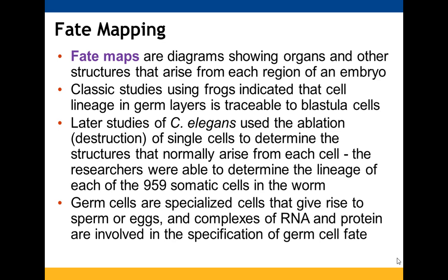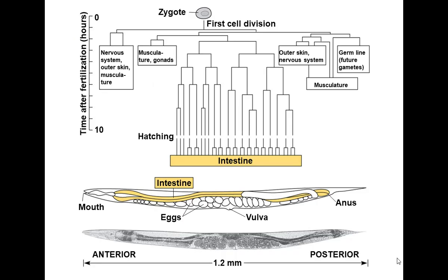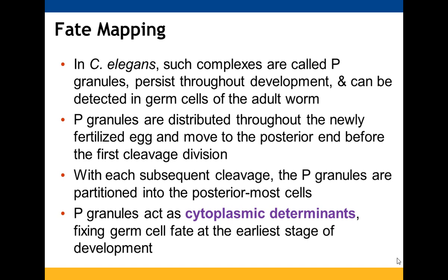After the first cell division, removing specific cells reveals which cells are responsible for which parts of the worm. There are complexes in C. elegans called P granules that are present throughout development and can be detected in germ cells. They are distributed throughout the first fertilized egg, move to the posterior end before cleavage, and continue moving toward the posterior-most cells through additional cleavage. These are acting as cytoplasmic determinants, helping to fix the germ cell fate fairly early on.